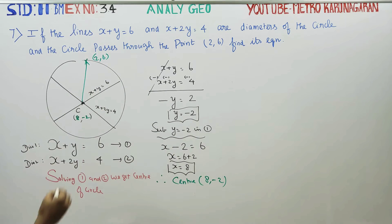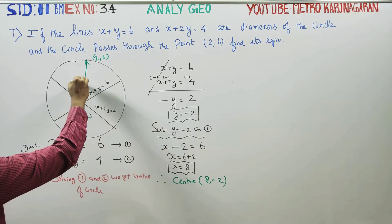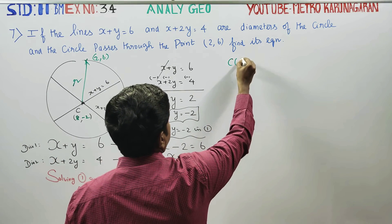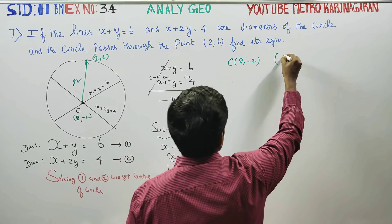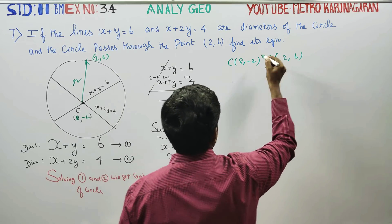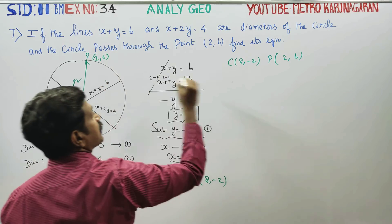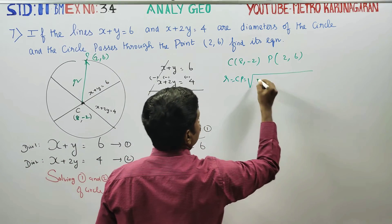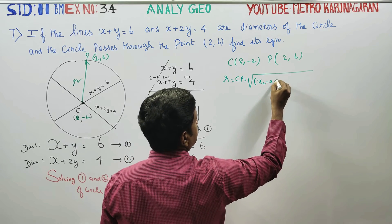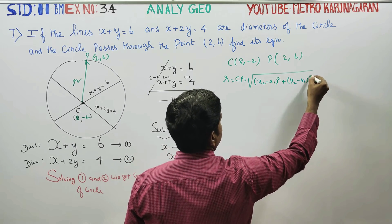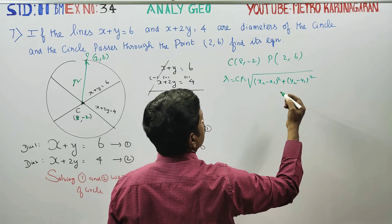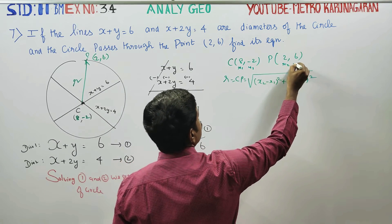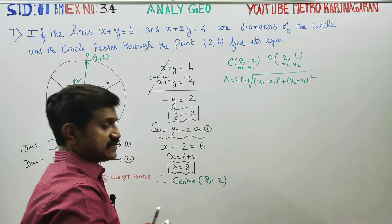The distance from the center to the point gives the radius. The center is (8, minus 2) and the point is (2, 6). Using the distance formula with x1, y1 and x2, y2, the radius equals the square root of (x2 minus x1) squared plus (y2 minus y1) squared.